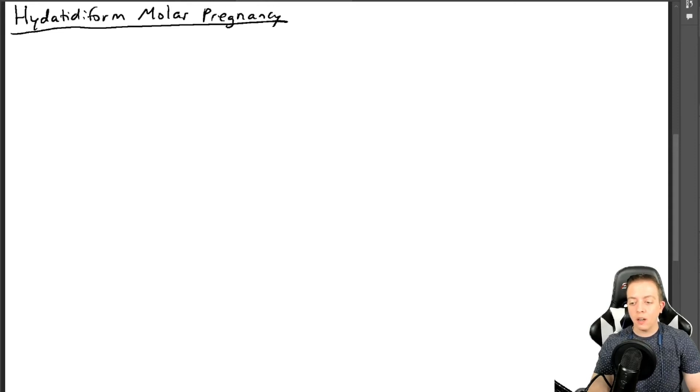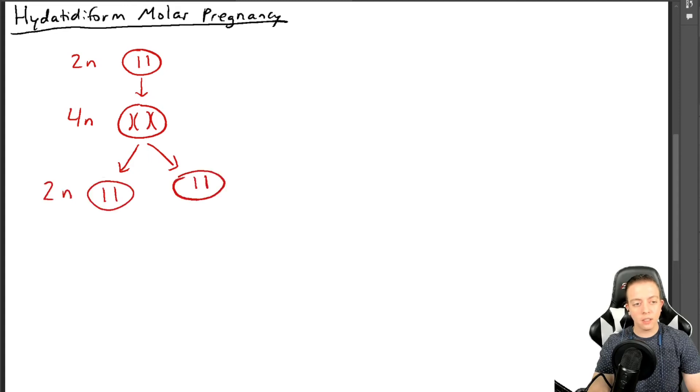So we're going to cover something called a hydatidiform molar pregnancy, also called a molar pregnancy. The first word is just really fun to say, so I included it. But this is what happens when DNA goes wrong, or at least one of the results of what happens when DNA goes wrong in the fertilization stage of pregnancy. So if we follow meiosis, we have one cell here. Let's take one cell as an example. We have 2N chromosomes. So we have one chromosome here from mom, one chromosome here from dad.